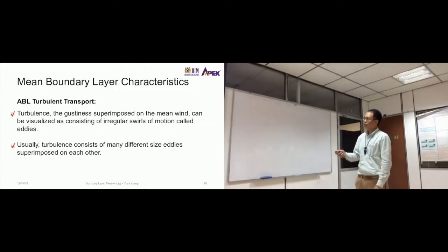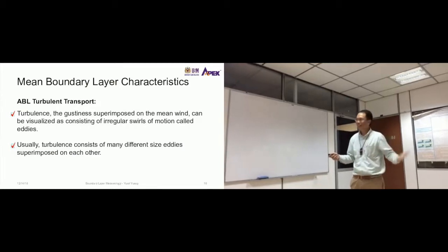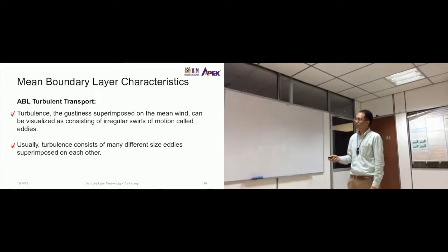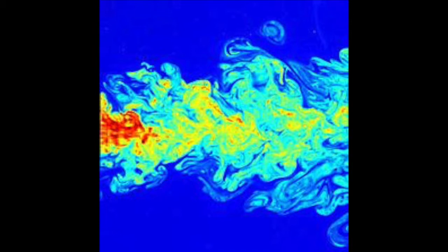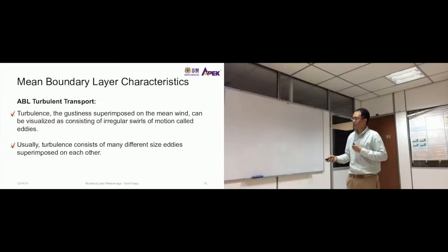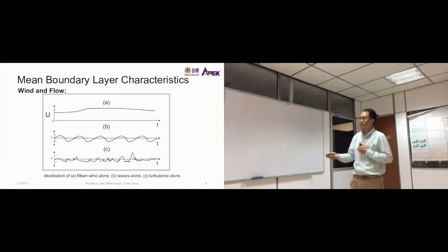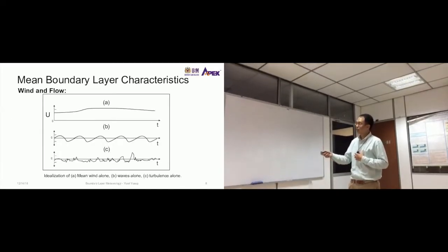We're going to this topic called turbulent transport. Turbulence is the gustiness superimposed on the mean wind, and can be visualized as consisting of irregular swirls of motion called eddies. You've seen this in the third paper — some people work on eddy covariance and use this basic concept. We can imagine turbulence as something on top of the mean wind.